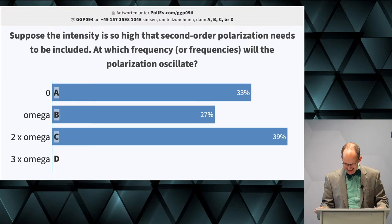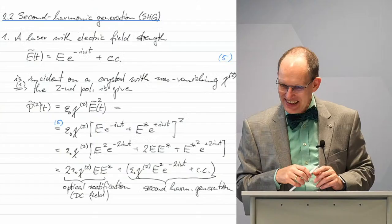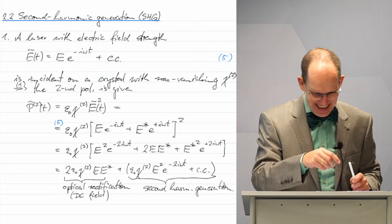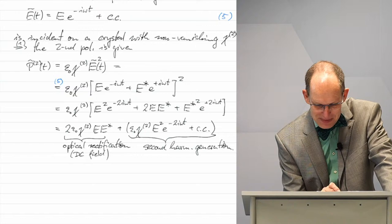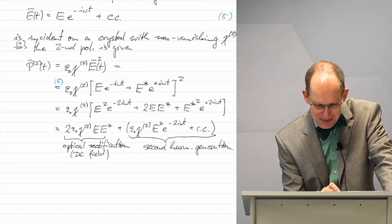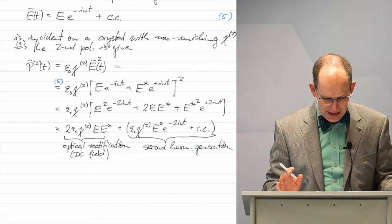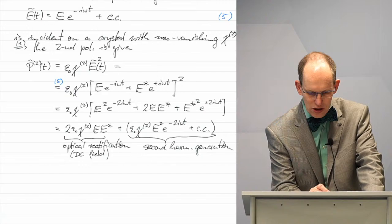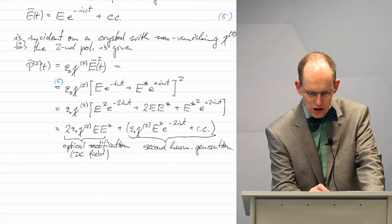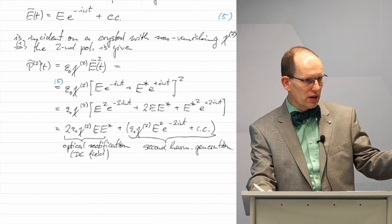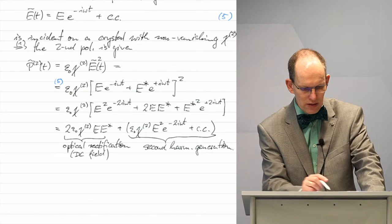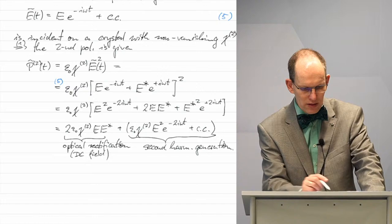Going back to the script: we took the square of the monochromatic wave and found, perhaps to our surprise, a constant term - this is optical rectification, a DC field. It has no time dependence. But remember, what we have here is just the second-order polarization. The first-order term, which oscillates at the fundamental frequency, is not included in this second-order expression.